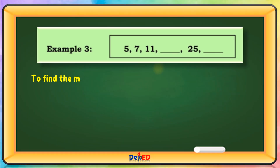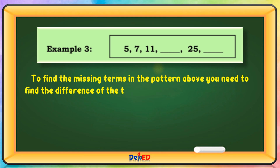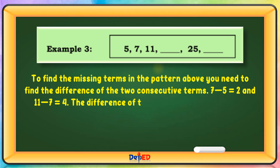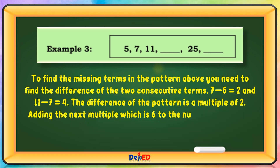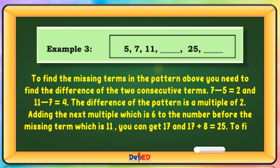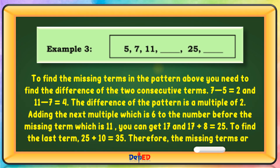To find the missing terms in the pattern above, you need to find the difference of two consecutive terms. 7 plus 5 equals 2 and 11 minus 7 equals 4. The difference of the pattern is a multiple of 2. Adding the next multiple, which is 6, to the number before the missing term, which is 11, you can get 17. And 17 plus 8 equals 25. To find the last term, 25 plus 10 equals 35. Therefore, the missing terms are 17 and 35.